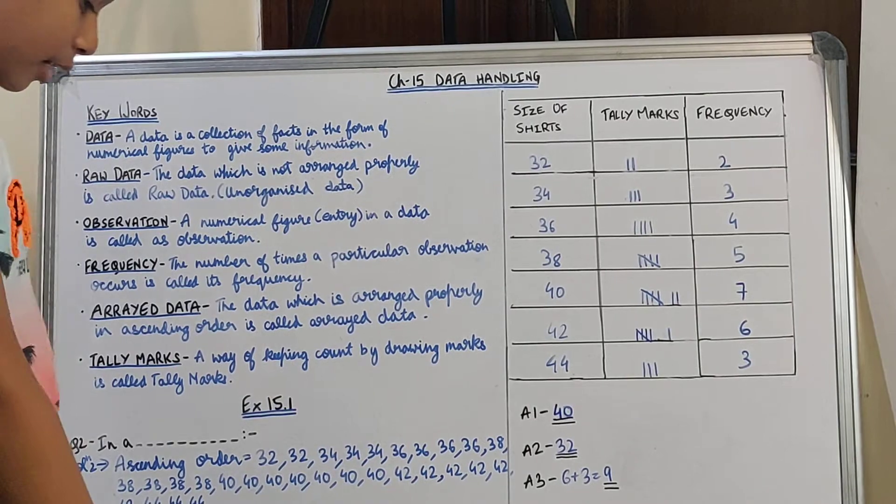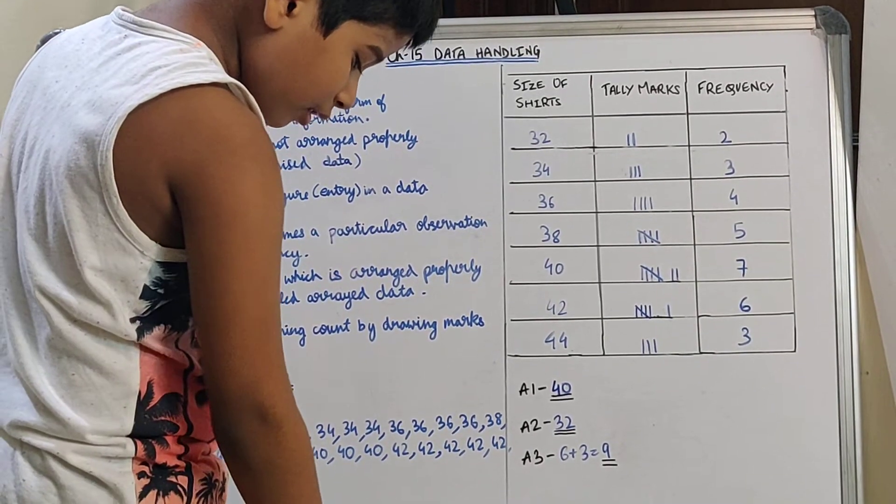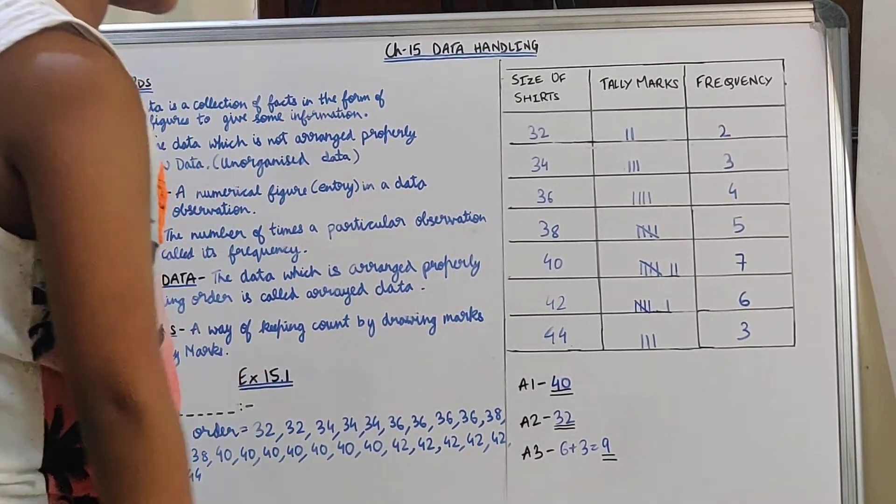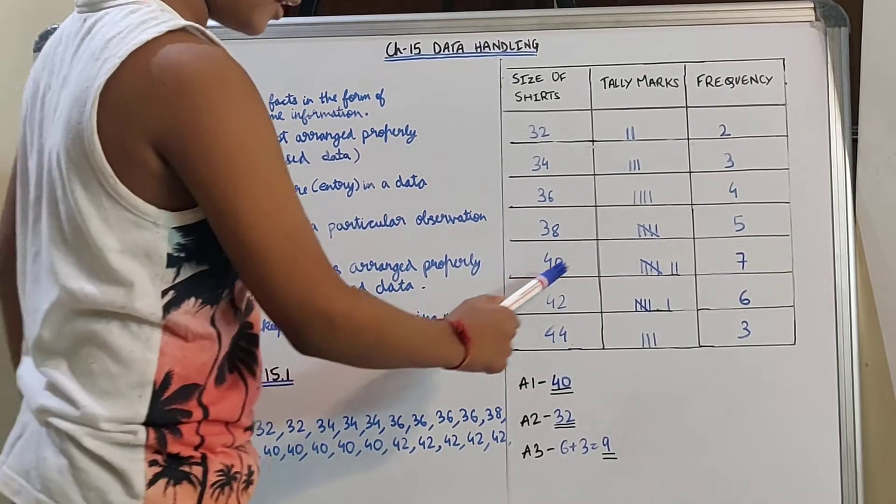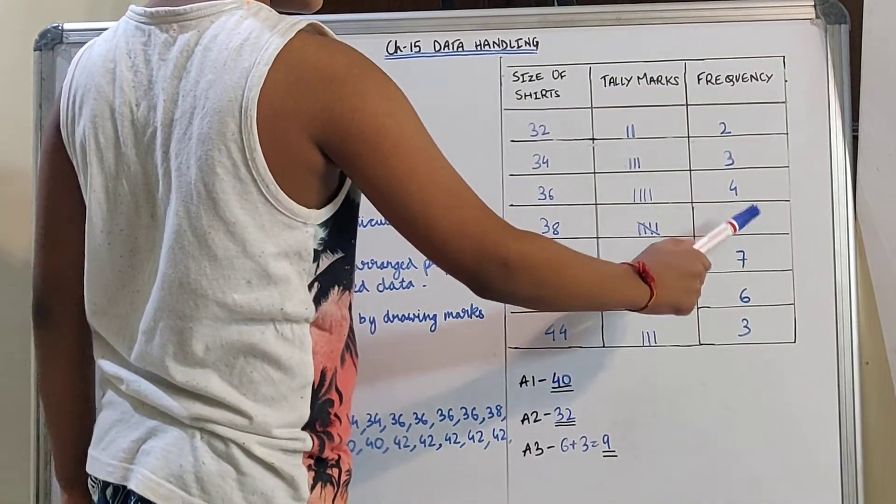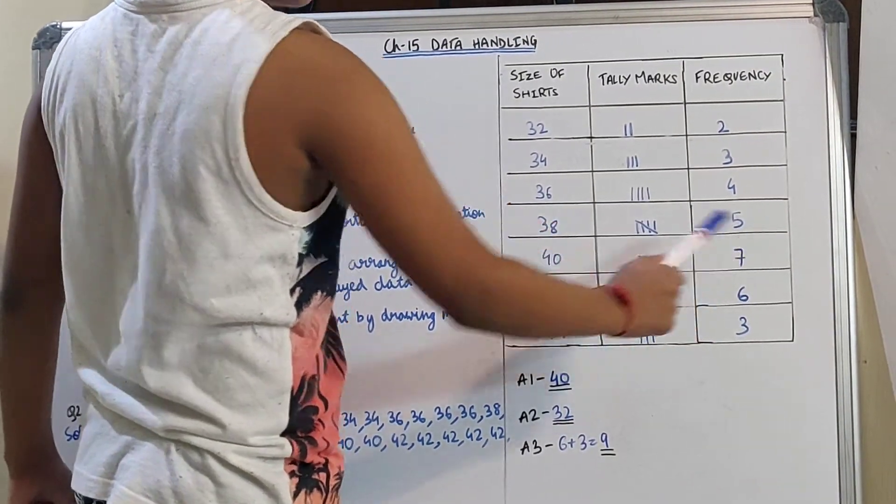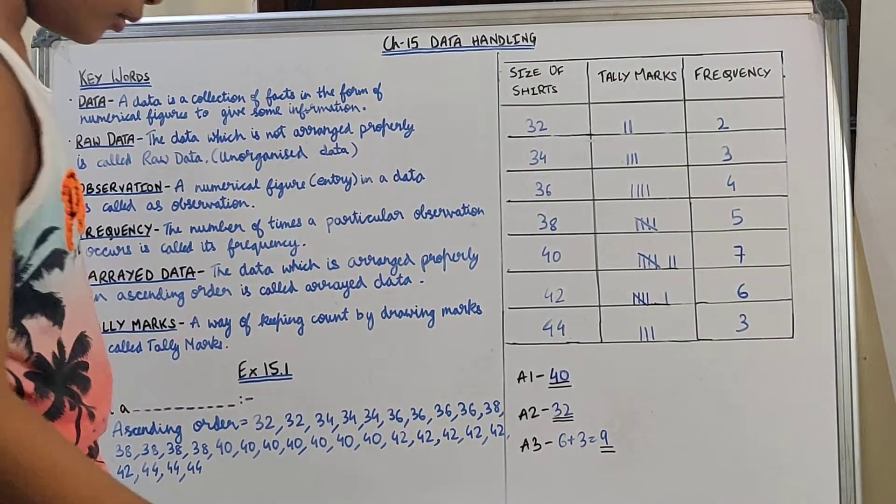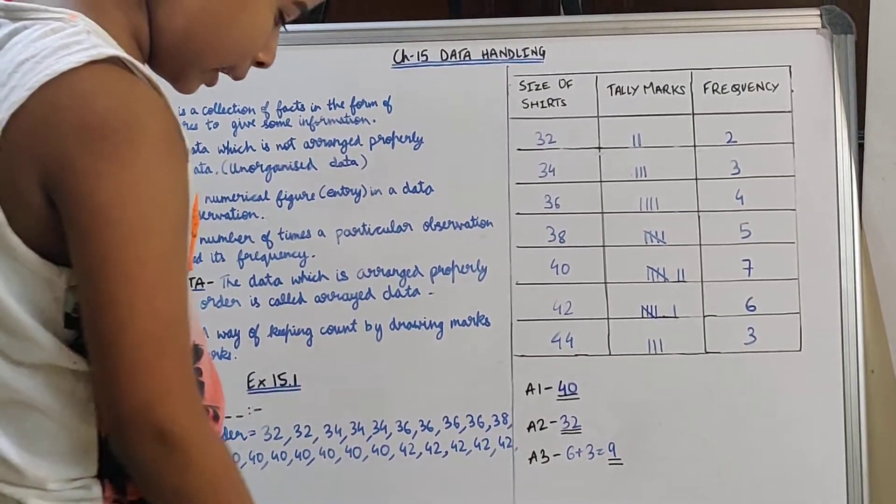So let's see. Which shirt size had the maximum sale? You can see clearly that 40 has the maximum sale over here. It has 7 shirts sold. So 40 is the answer of the first one.